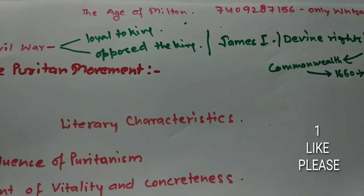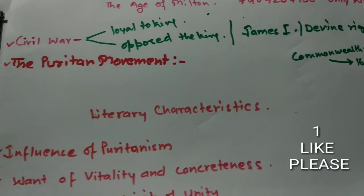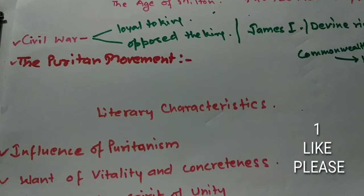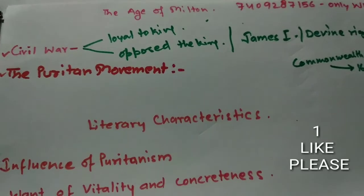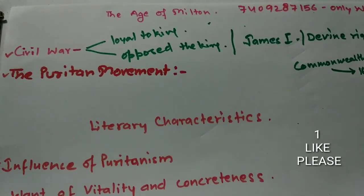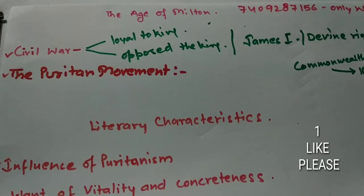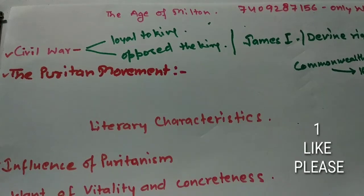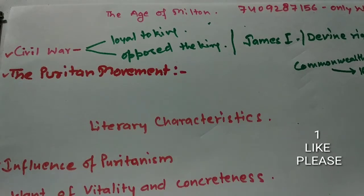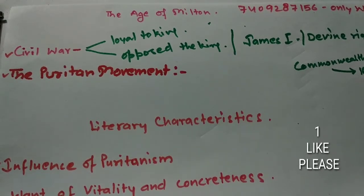In order to understand the age of Milton, we need to talk about two things: civil war and the Puritan movement. We will talk about the main qualities, and then the literary characteristics of the time — what was written in the literature.